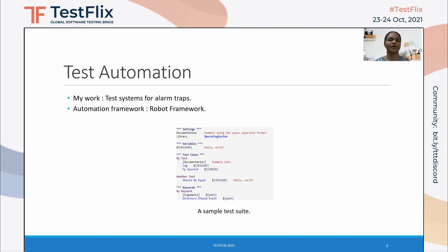In Robot Framework, test cases are written to test and automate software processes. For example, in this picture we can see that there are two test cases: my test and another test. These test cases form what is called a suite. A suite contains several test cases. We can also write keywords that can be common within the test suite, and we can include these keywords inside our test cases as per the requirement.